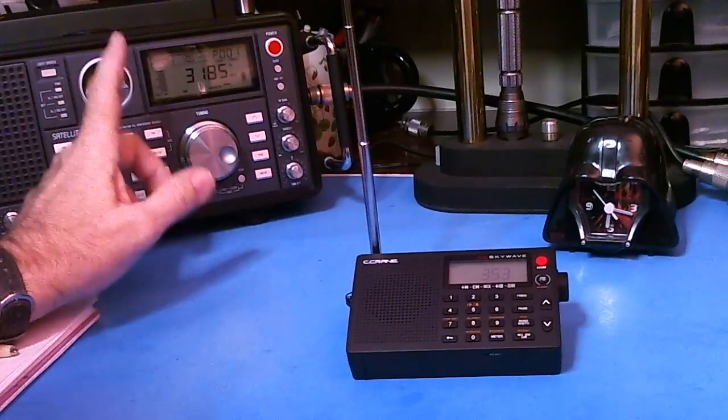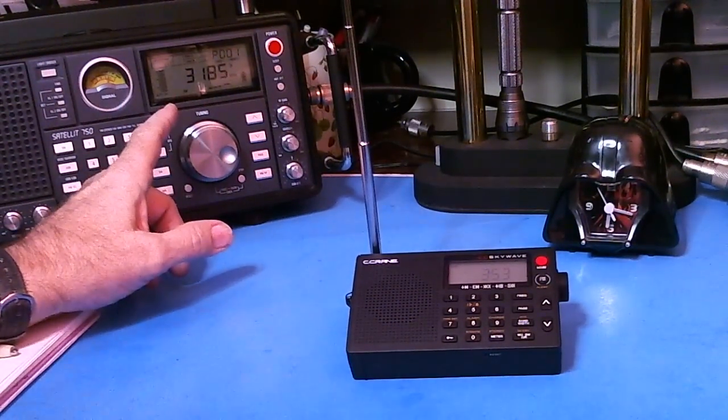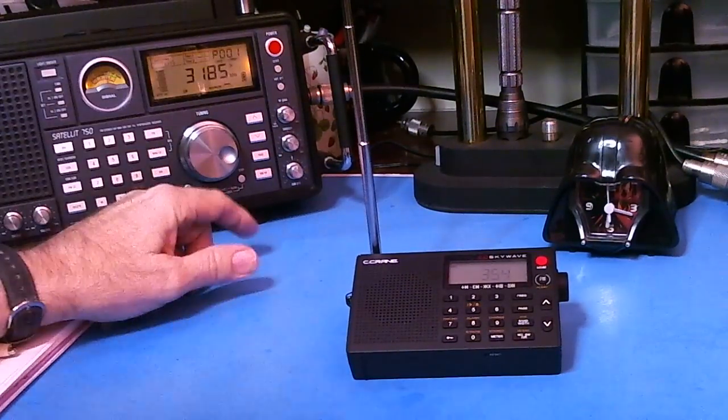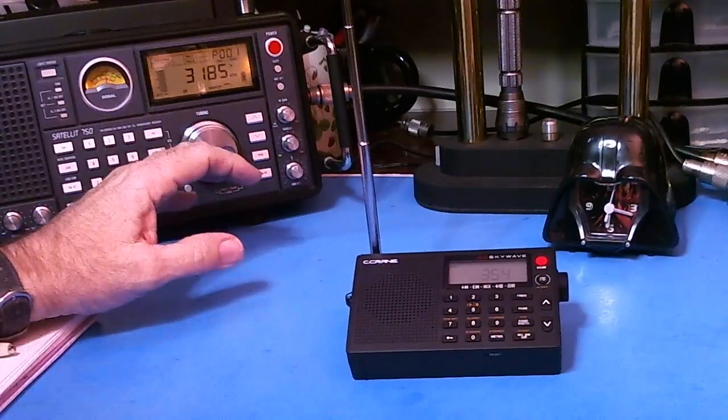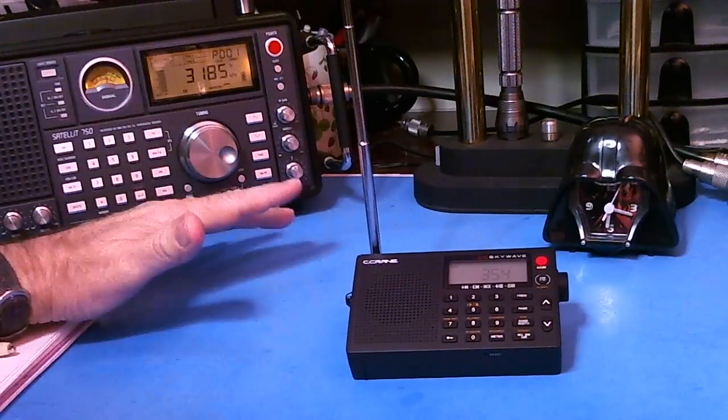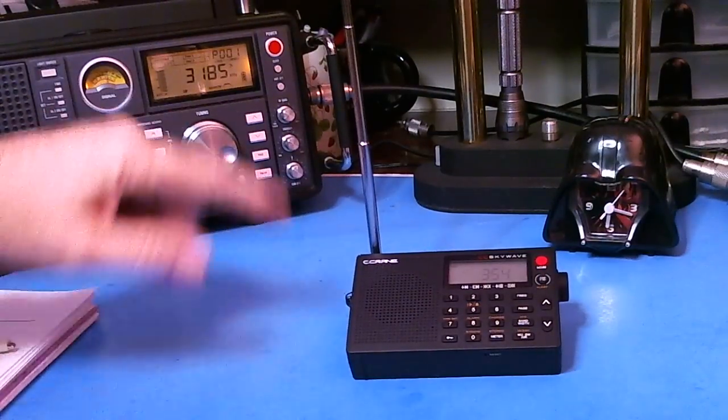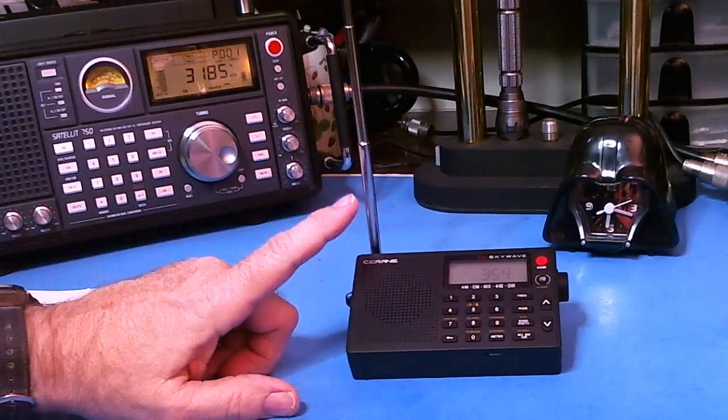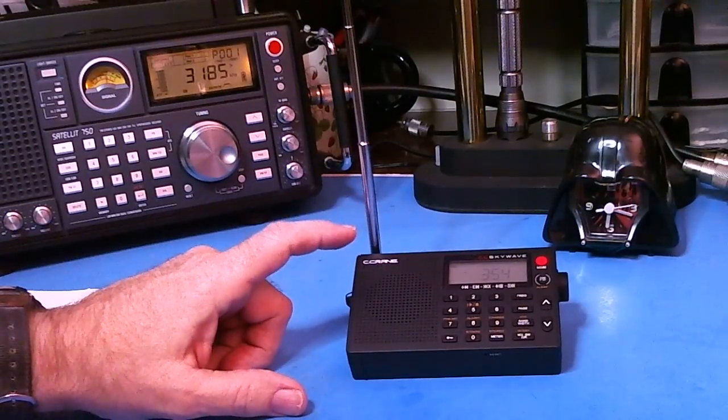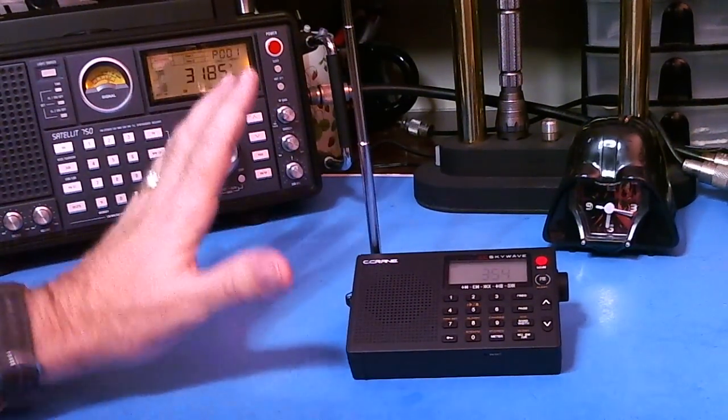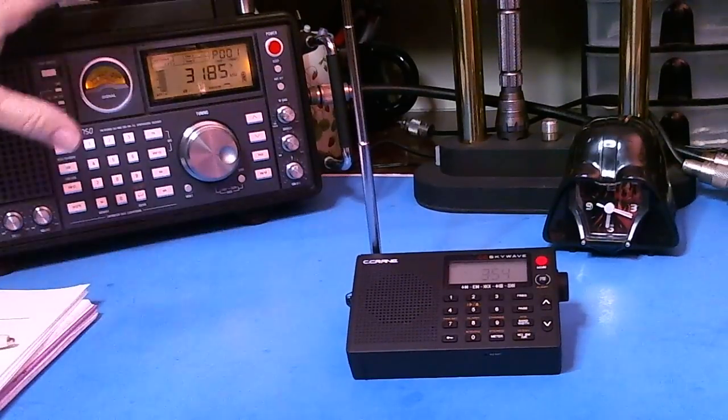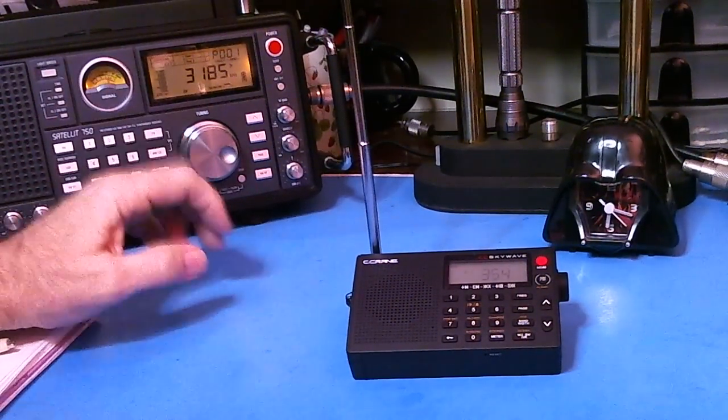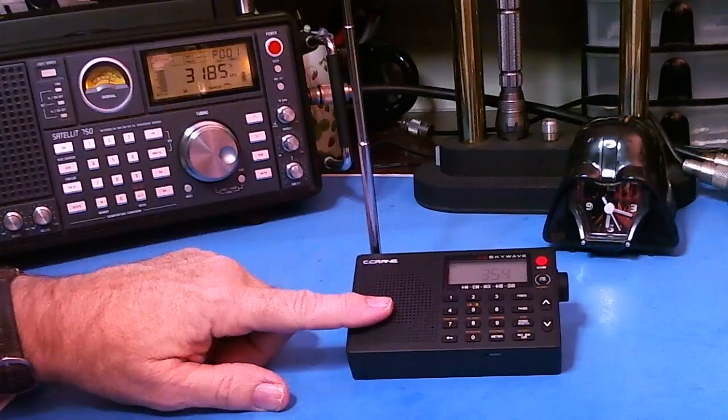What I did is I did an ATS scan - let me turn the backlight on - and captured some stations. I'm just going to use that for reference. I'm not comparing the two radios plus the Skywave. I'm going to use its telescopic antenna, so I'm not comparing the two. I'm just going to use what I found on the Grundig for places to look to see if I can hear them on the Skywave.